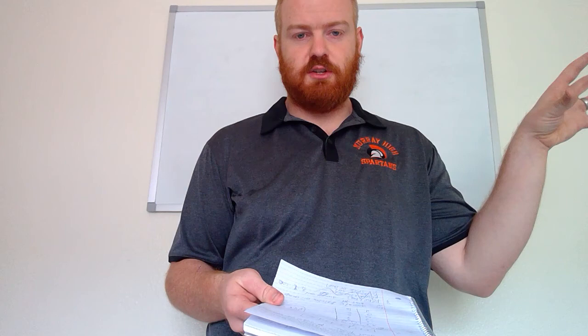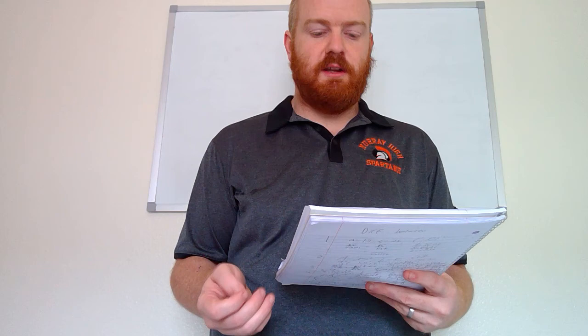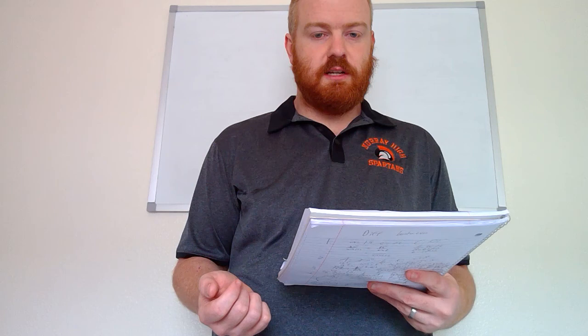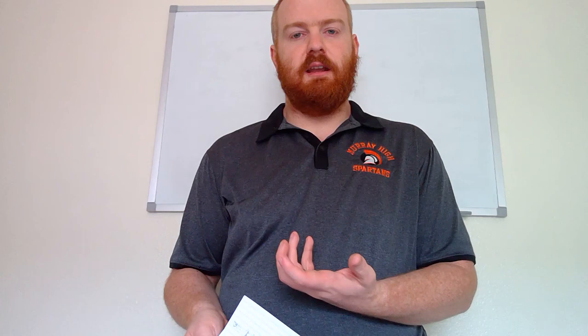For the second part, the sample is just the people involved in the specific study — that's the group being used to describe the entire population. For part three, the placebo in the experiment is the fake drug, which is the saltwater injection. For part four, the placebo effect is a phenomenon where some people who take a placebo still find pain relief, even though there was no actual painkiller — their brain essentially thought they were taking one, so it ended up relieving some of their pain.